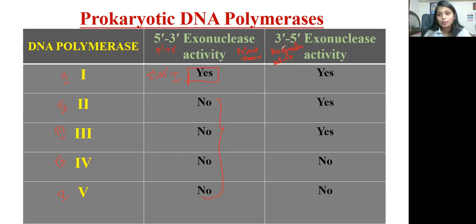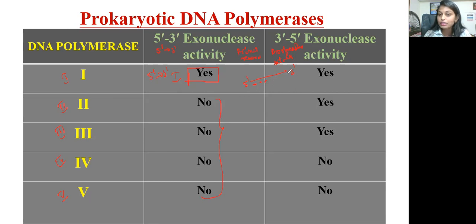When it comes to the three prime to five prime exonuclease activity, primers are added as short stretches of RNA strands at the five prime end which are helpful for DNA synthesis. At the three prime end, enzyme activity takes place for proofreading. DNA polymerase one, two, and three are all involved in the proofreading activity, so these three enzymes have three prime to five prime exonuclease activity.